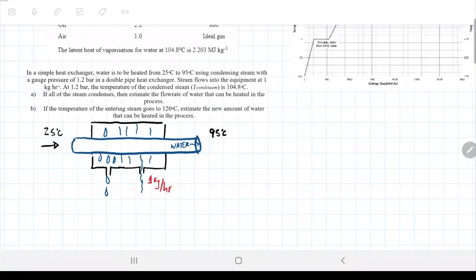In a simple heat exchanger, water is to be heated from 25°C to 95°C using condensing steam with a gauge pressure of 1.2 bar in a double pipe heat exchanger. For now, you don't have to worry about what the double pipe heat exchanger means. It's just a box in which we exchange heat. Steam flows into the equipment at 1 kilogram per hour. At 1.2 bar, the temperature of the condensed steam is 104.8°C. Now, how convenient is that, right? Exactly the same thing that I showed you before.